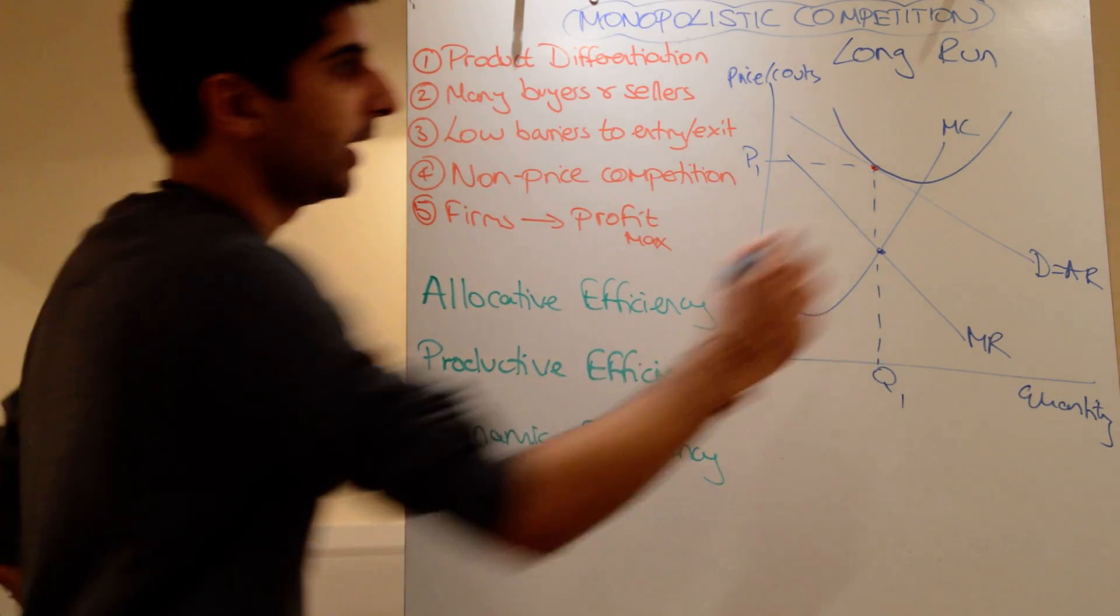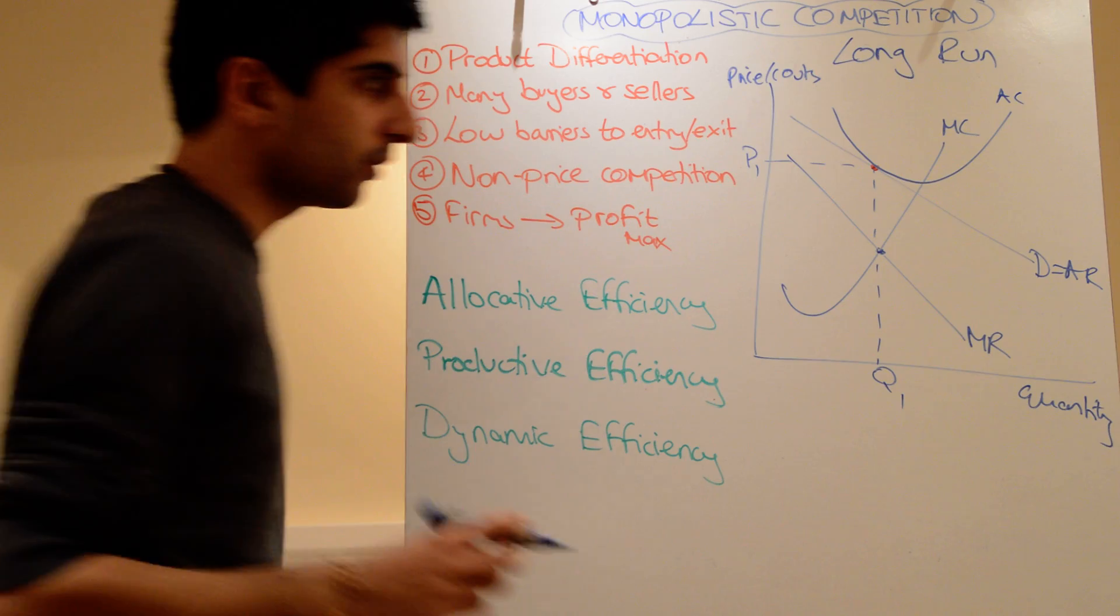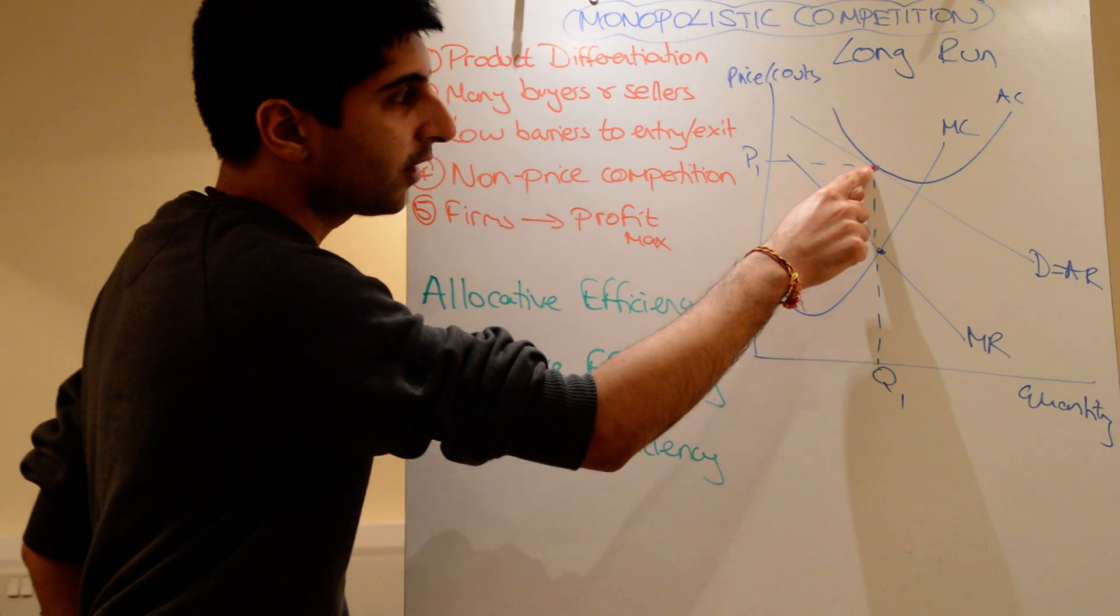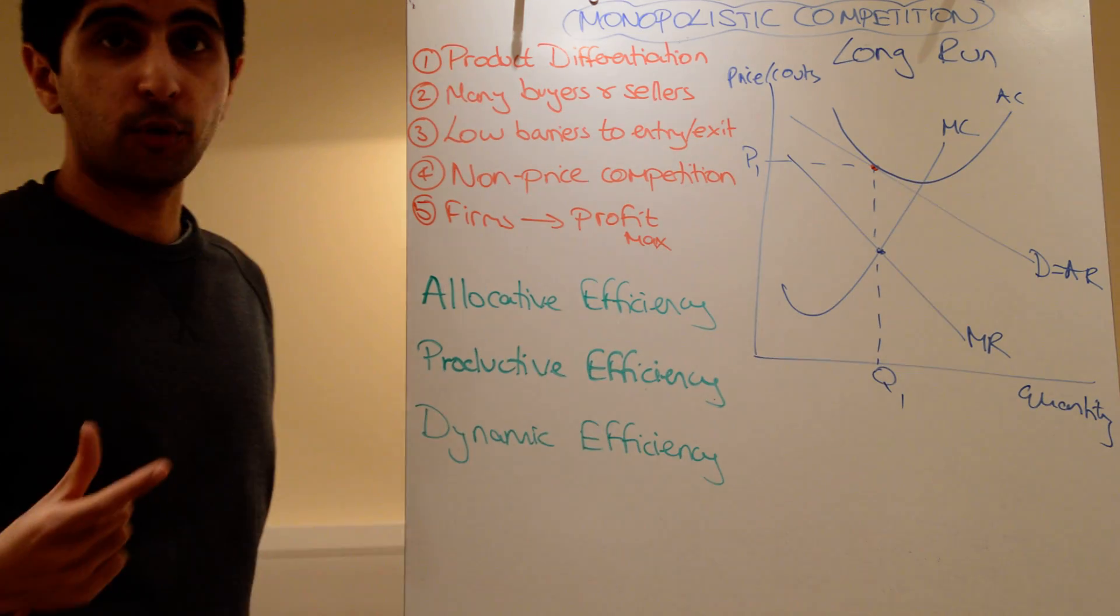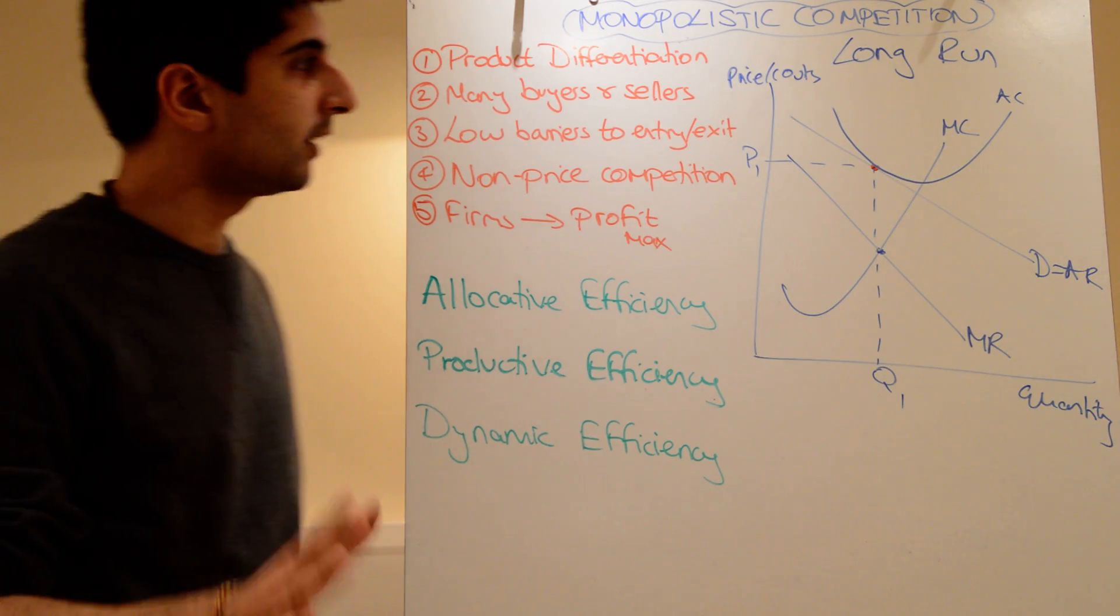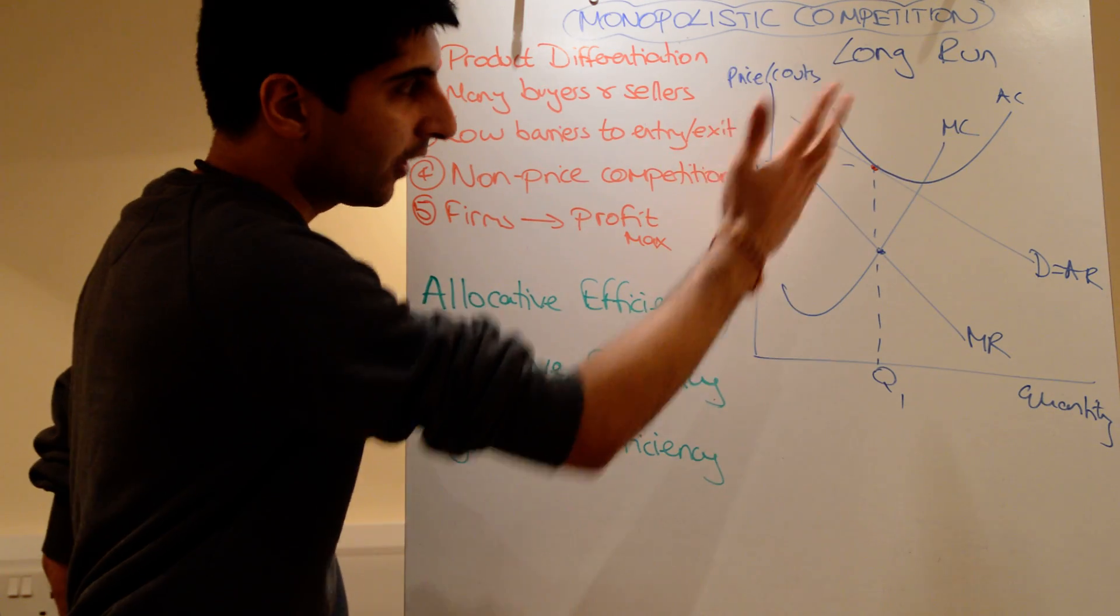So a couple of things to get right here. Obviously make sure it's tangential, so just touching the line at that point. And then make sure your MC still cuts your AC at the lowest point. These are all technicalities you've got to get right. And that's how you draw it. And that's perfect.